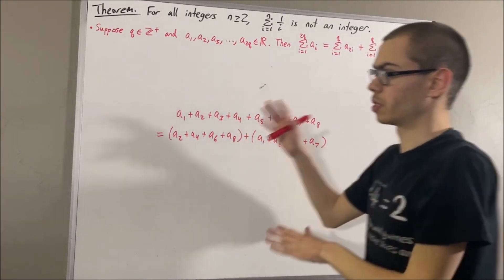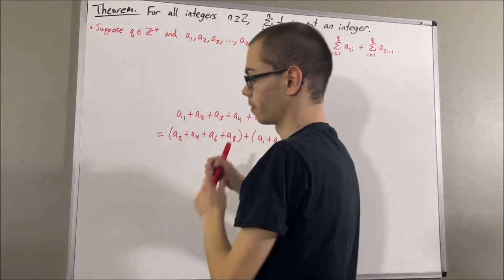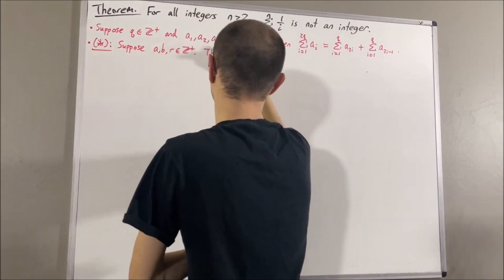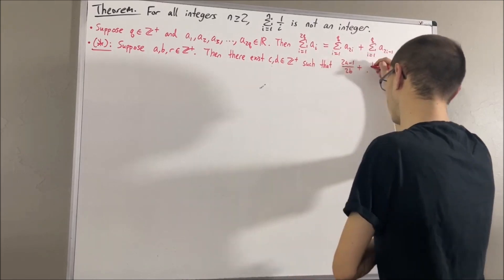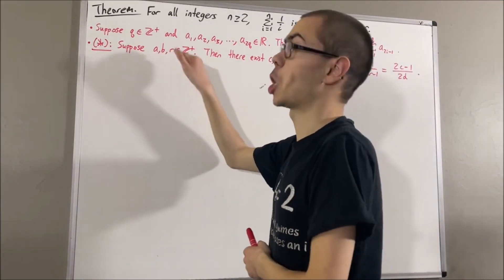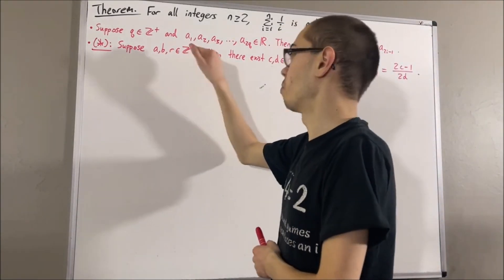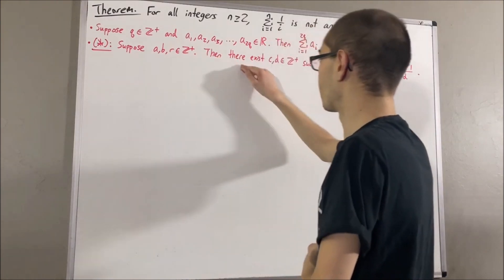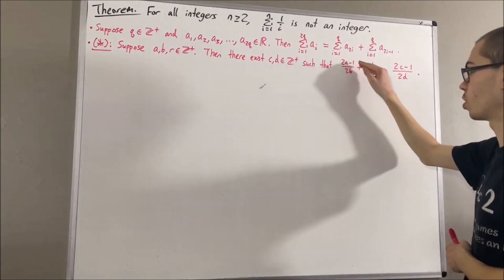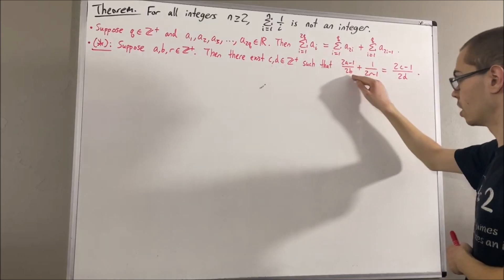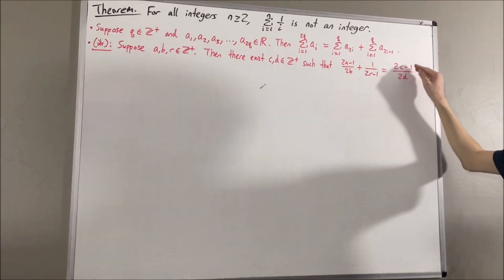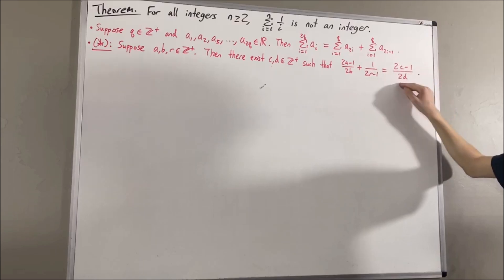Another result that we're going to be using is the following. Suppose a, b, and r are positive integers. Then there exist positive integers c and d such that (2a − 1)/2^b + 1/(2^r − 1) is equal to (2c − 1)/2^d.